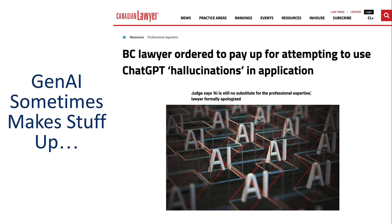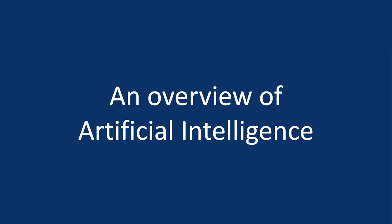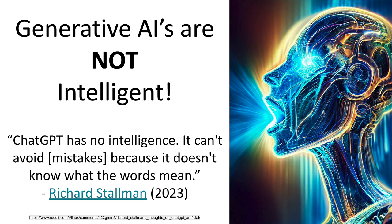Suffice to say, generative AI tools will not infrequently make things up — so that's something we all need to be aware of. Before we go any deeper, I just want to do a quick overview of artificial intelligence so we're all on the same page in terms of the language we're using. As you might have guessed from the story about the lawyer, generative AIs are not intelligent. They are word, sentence, and paragraph prediction machines. They do a really good job, but they are not built for fact-finding or for reproducing facts.